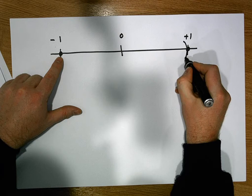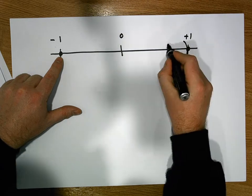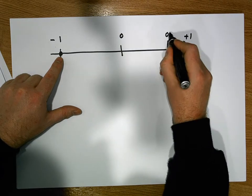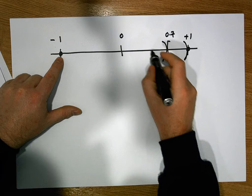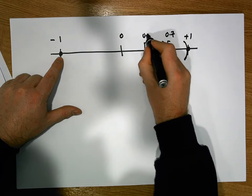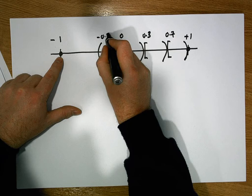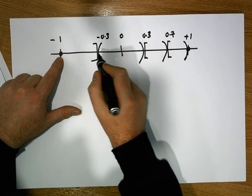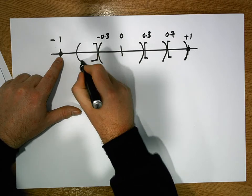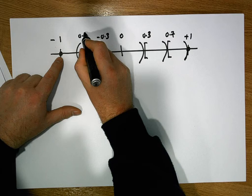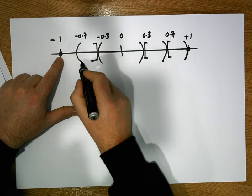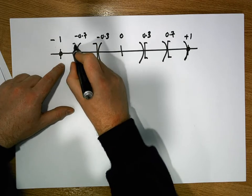And what we're going to do is we're going to create intervals across this. The interval here between plus 1 and 0.7, and 0.7 and 0.3, and 0.3 and minus 0.3, and minus 0.3 and minus 0.7, and minus 0.7 and minus 1.